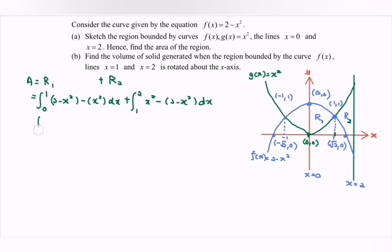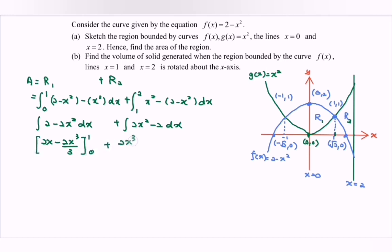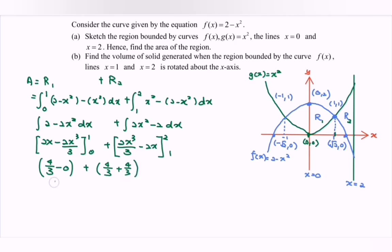Integrating: for region 1, we have the integral of (2 minus 2x squared) dx from 0 to 1, which gives 2x minus 2x³/3, evaluated from 0 to 1. For region 2, we have the integral of (2x squared minus 2) dx from 1 to 2, giving 2x³/3 minus 2x, evaluated from 1 to 2. Substituting the limits: region 1 gives 2 minus 2/3 = 4/3, and region 2 gives 4/3. So total area equals 4/3 plus 8/3 equals 12/3 equals 4 square units.